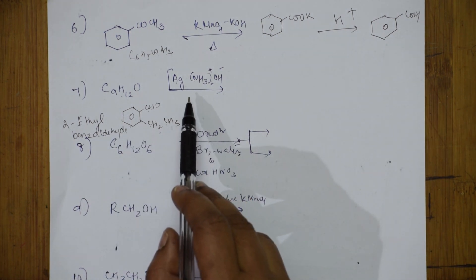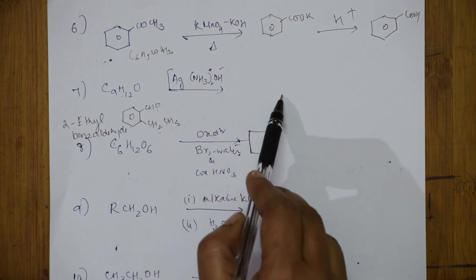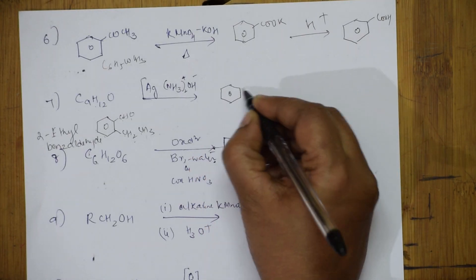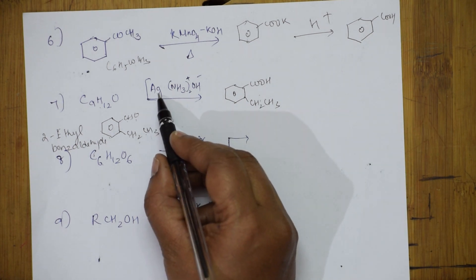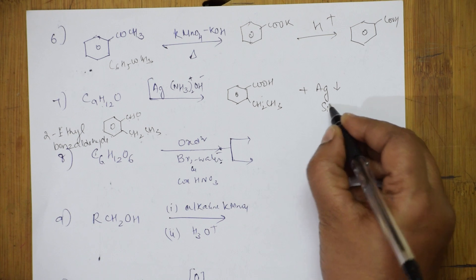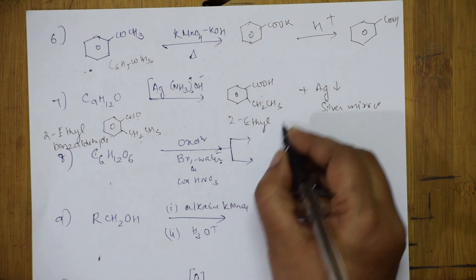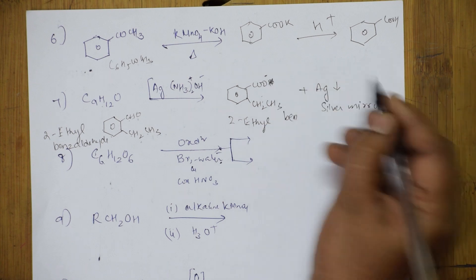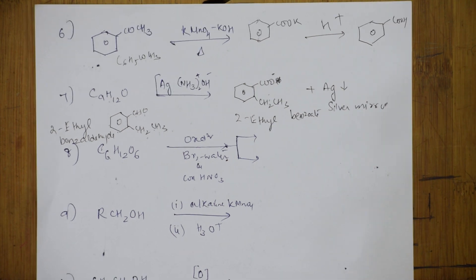Now treating 2-ethylbenzaldehyde with ammoniacal silver nitrate (Tollens reagent): Tollens reagent always oxidizes the aldehyde group to an acid. Wherever there is an aldehyde, make it an acid. The CH2CH3 group stays unchanged. Silver precipitates out as the silver mirror test. The product is 2-ethylbenzoate (C–O⁻ with Ag⁺), also written as 2-ethyl benzoate — silver precipitates as the silver mirror.